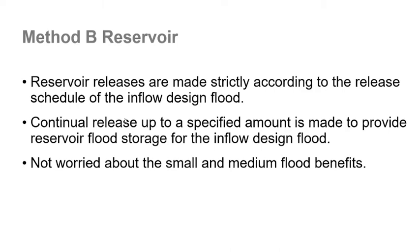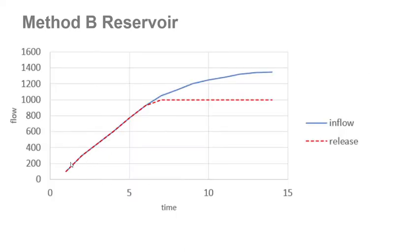Method B states that reservoir releases are made strictly according to a release schedule — in this case based on the inflow design flood. The focus is on providing protection for very large floods rather than worrying about small and medium flood benefits. The way you do that is by making a continual release up to a specified amount to ensure you have reservoir flood storage available in case a very large flood occurs. In a simple schematic, the red dashed line is your release and the blue line is your inflow, starting from the top of conservation pool.